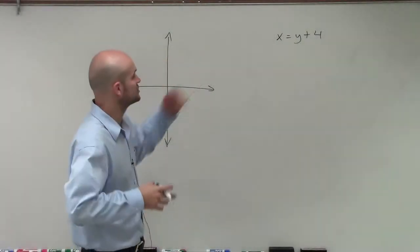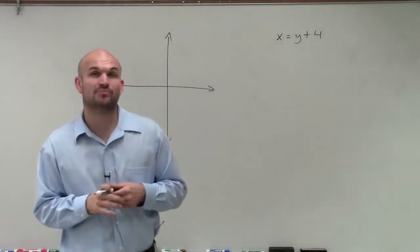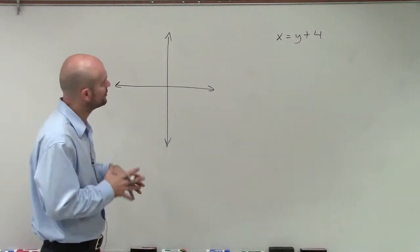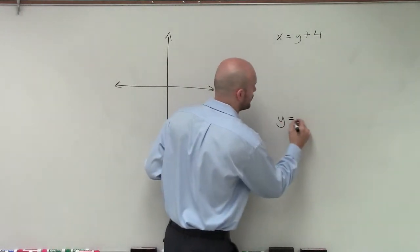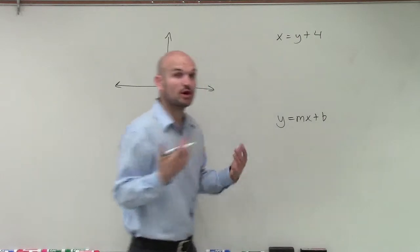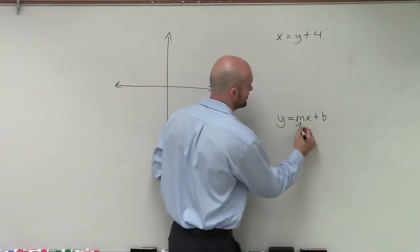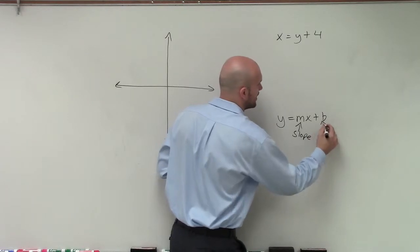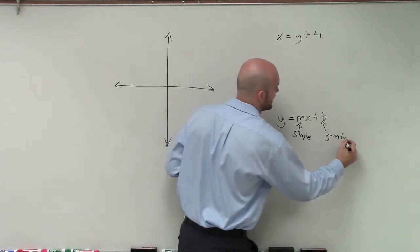Welcome. What I want to do is show you how to graph x equals y plus 4. When graphing this, we're going to learn how to graph this using what we call y equals mx plus b form, which we call slope-intercept form. This is called slope-intercept form because our m represents our slope and our b represents our y-intercept.